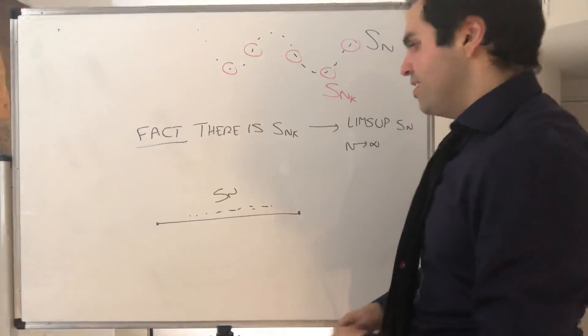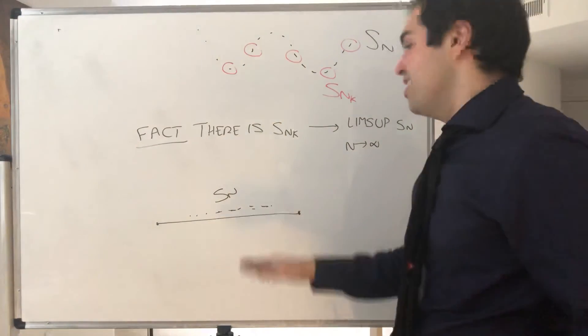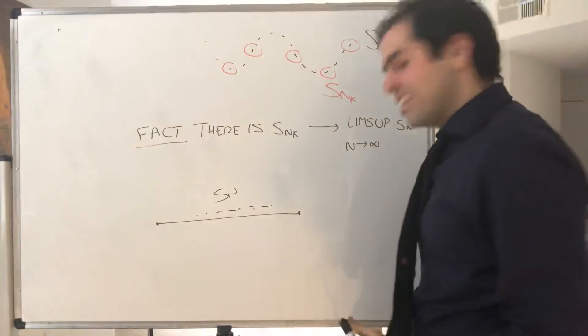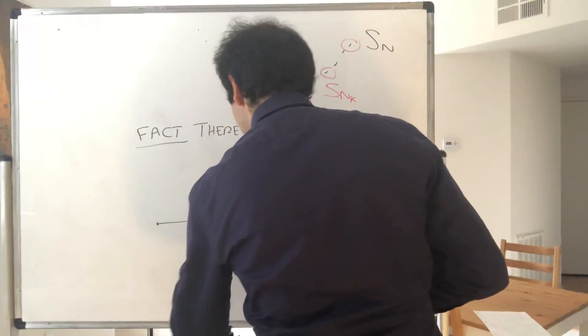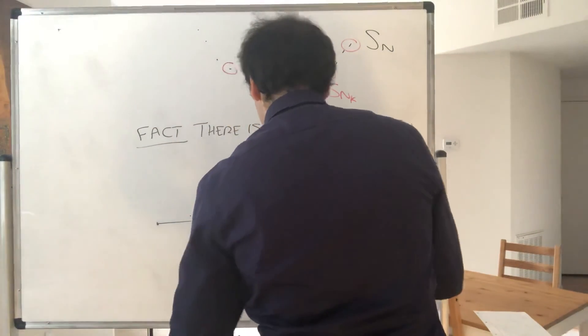Well, it cannot just go anywhere. Basically what we have is that it has a convergent subsequence. So there must be some subsequence SnK that converges.